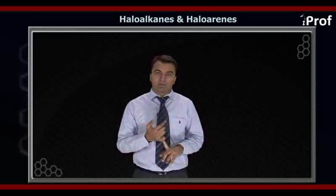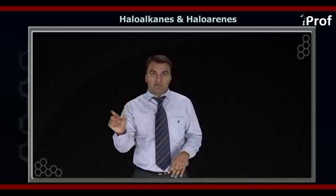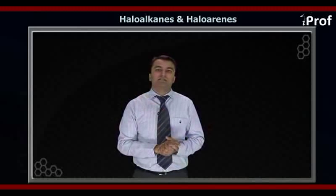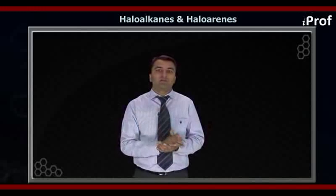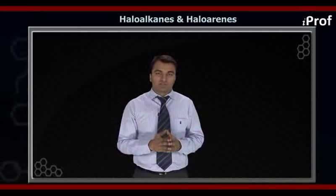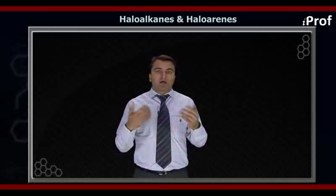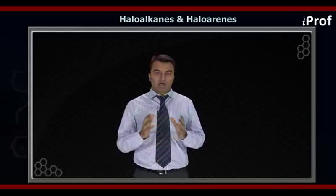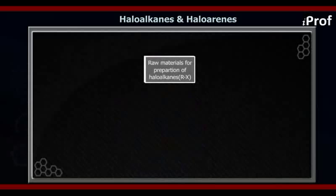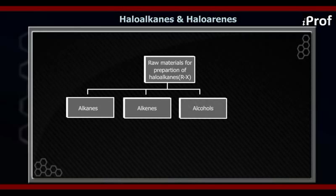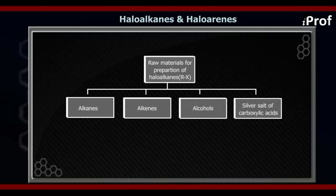We will see the physical and chemical properties, which help us to understand where we can apply these compounds — be it an industrial process, a commercial process, or a laboratory process. Coming to the preparations of haloalkanes, that is RX, haloalkanes are broadly prepared using four raw materials: alkanes, alkenes, alcohols, and the silver salt of carboxylic acids.